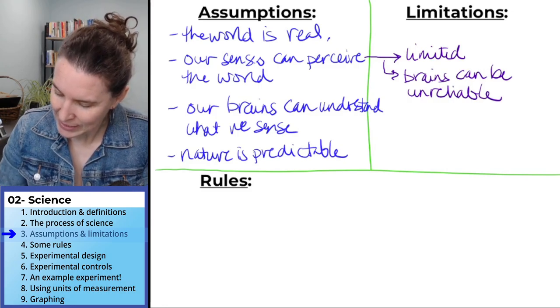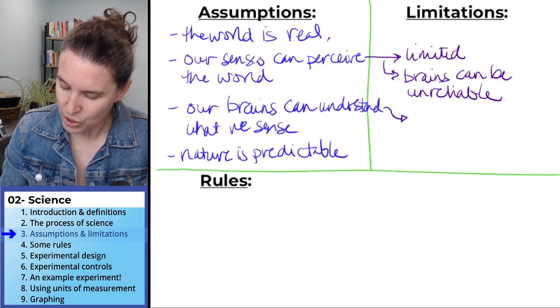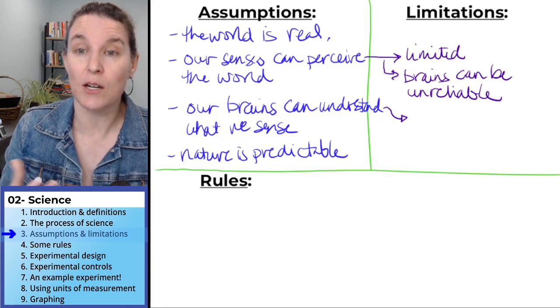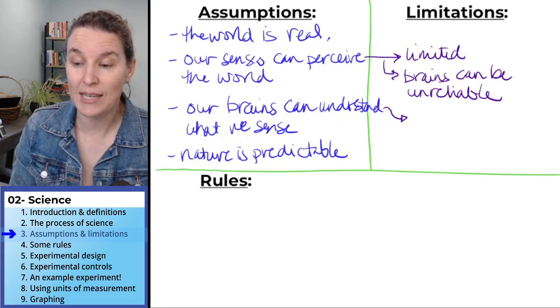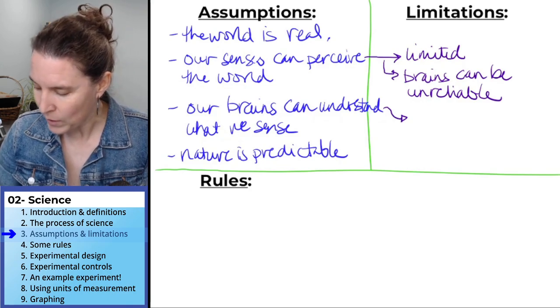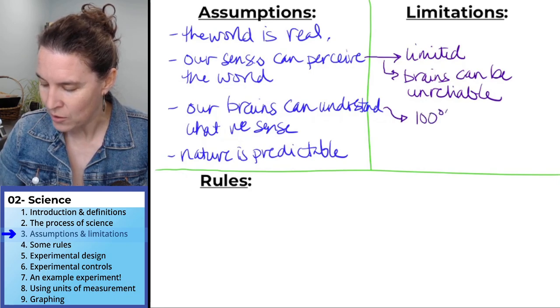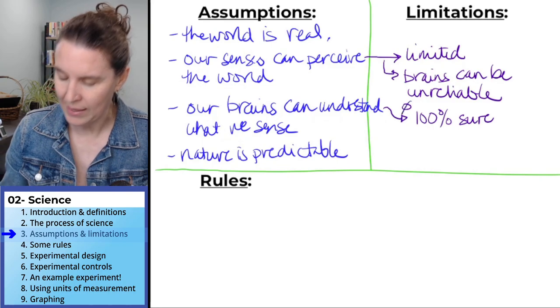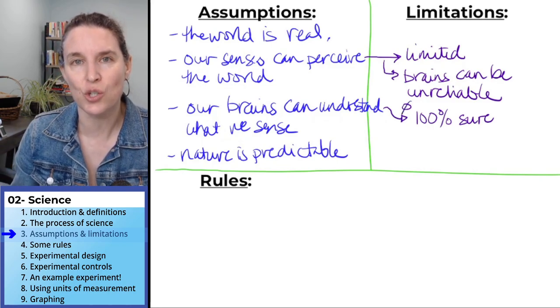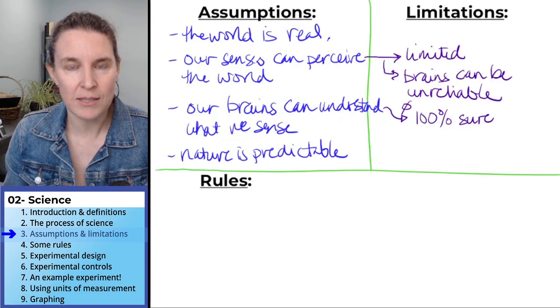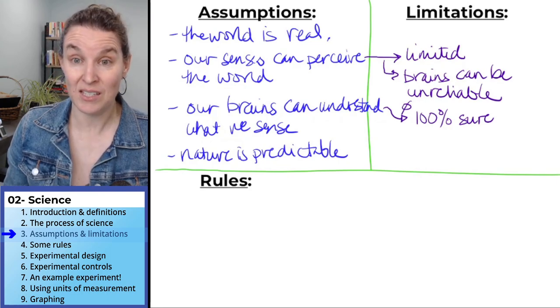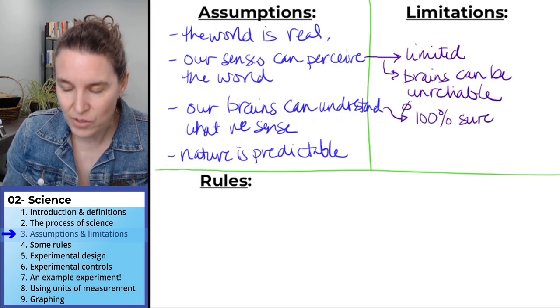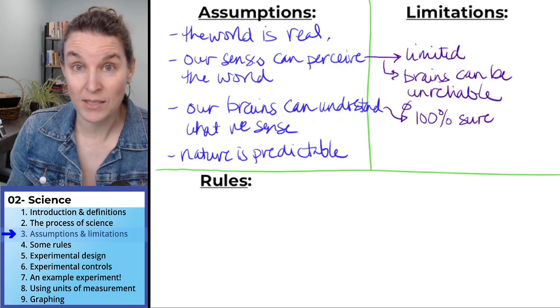I'm going to connect the next one to our third assumption. The assumption is that our brains can understand what we sense, but honestly, we can't ever be 100% sure. I'll just say like that. We can't ever be 100% sure that what we are sensing or what we are seeing is the way that it is. There is always uncertainty with the process of science.